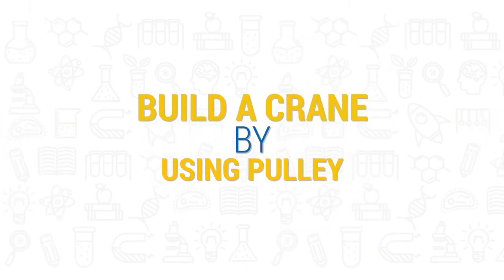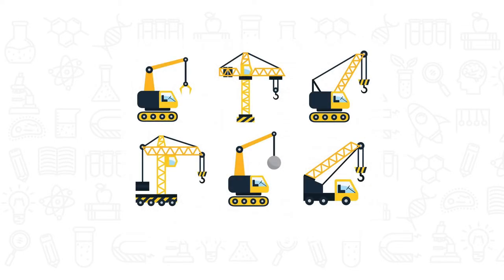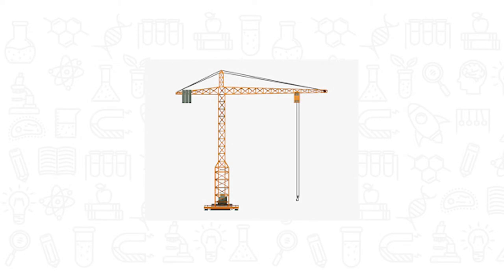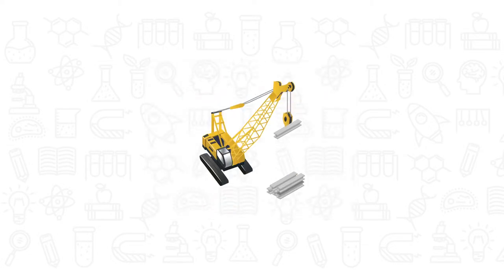Build a crane by using a pulley. There are many types of cranes. Some are attached to trucks, but others are put together at building sites to build very tall buildings. They are called tower cranes. A crane is a machine with a swinging arm for lifting and carrying heavy weights.